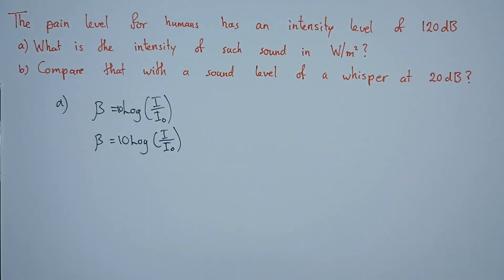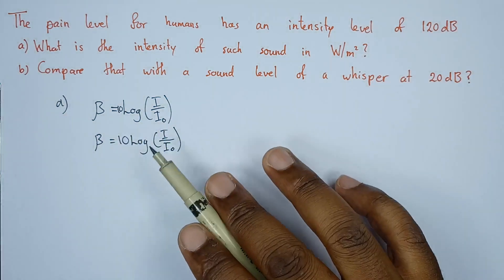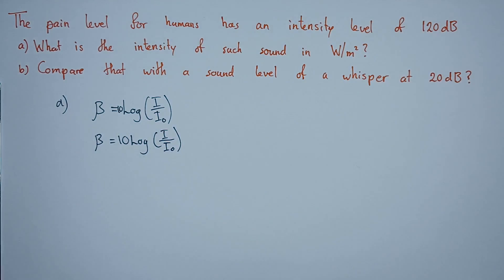I naught is a standard value. What we're looking for in this case is the intensity. We have been given the intensity level. Since we're looking for I, let's make I the subject of the formula.